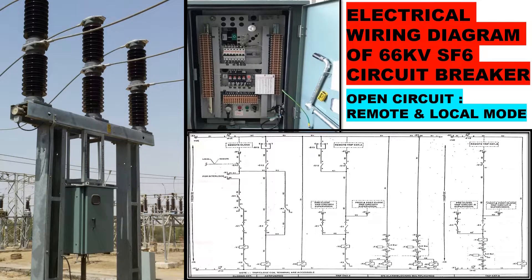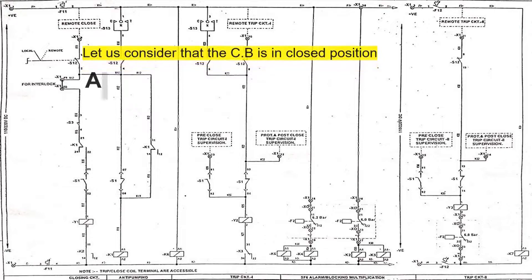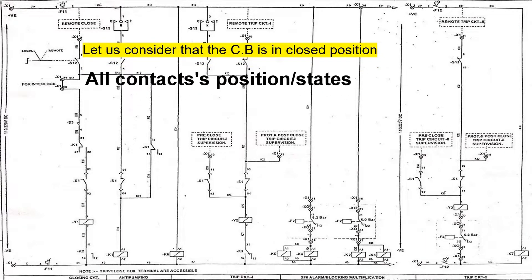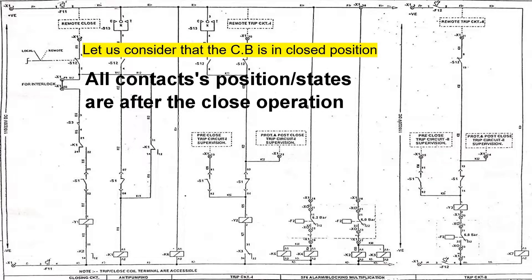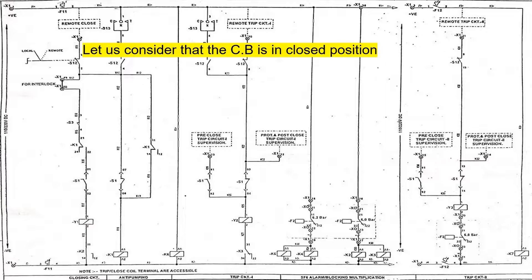Today we will see open circuit both in remote and local mode of a 66kV SF6 gas circuit breaker wiring diagram. First of all, let us consider that the circuit breaker is in closed position and the state of the contacts are after the circuit breaker closes. The network diagram will be as shown here. For understanding the closing circuit of a circuit breaker, refer to previous videos linked in the description below. Let us see it in a more simplified form for better understanding.